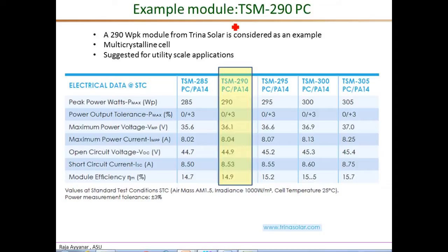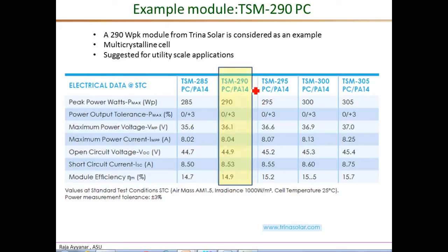The example we are going to consider is the TSM-290PC, a 290 watts peak PV module from Trina Solar based on multi-crystalline cells, recommended for utility-scale applications. The data sheet lists values for five different products; the one we will specifically look at is highlighted in the yellow box — the TSM-290.